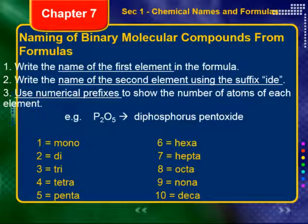We're going to be using these numerical prefixes. We're not going to go any higher than this — prefixes for higher numbers do exist, we just won't use them in this course. The prefixes are: mono, di, tri, tetra, penta, hexa, hepta, octa, nona, and deca.